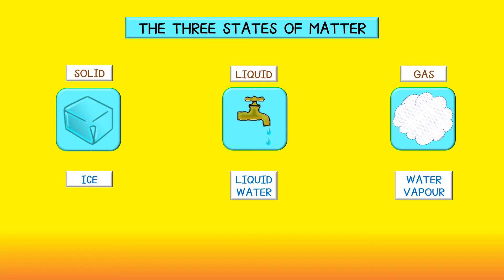The solid state of water is ice. The liquid state of water is liquid water. The gas state of water is water vapor.